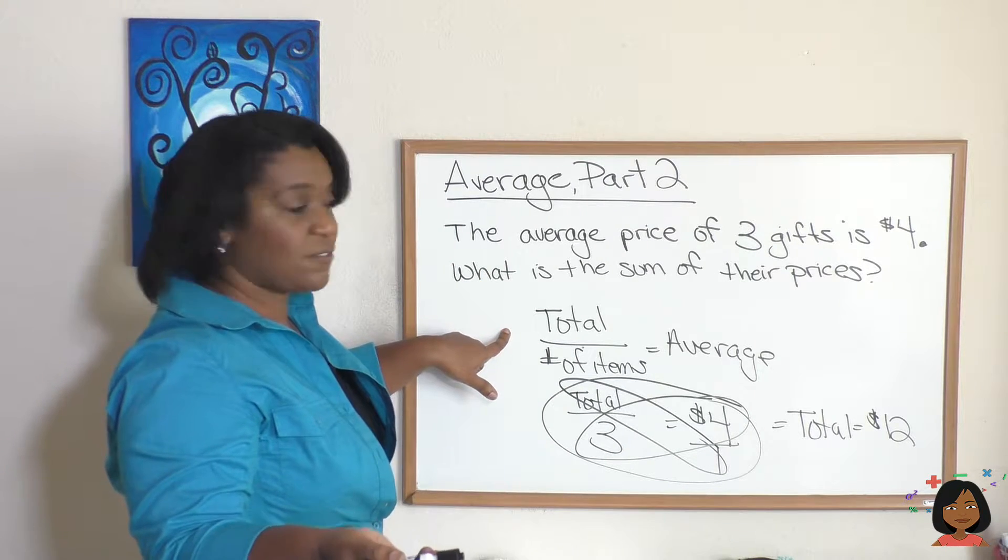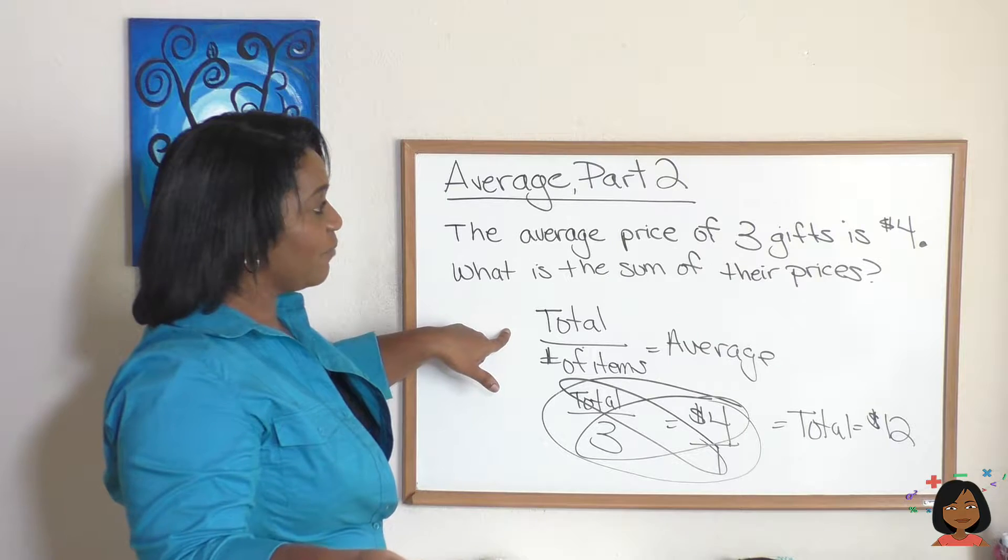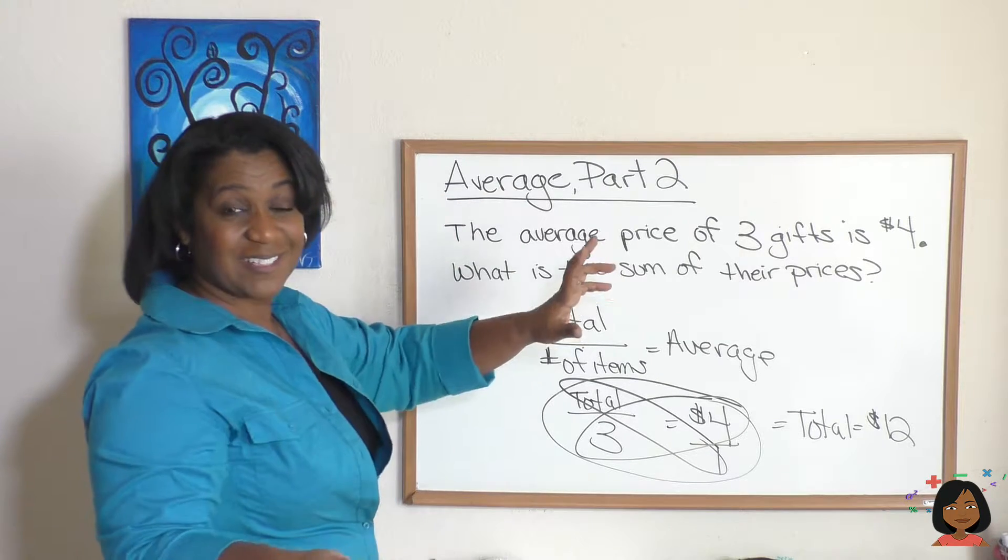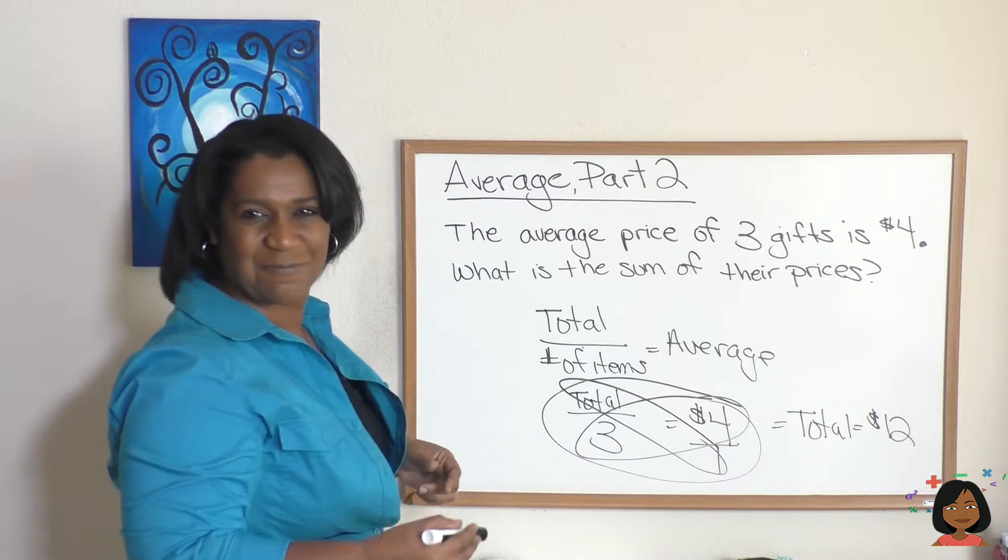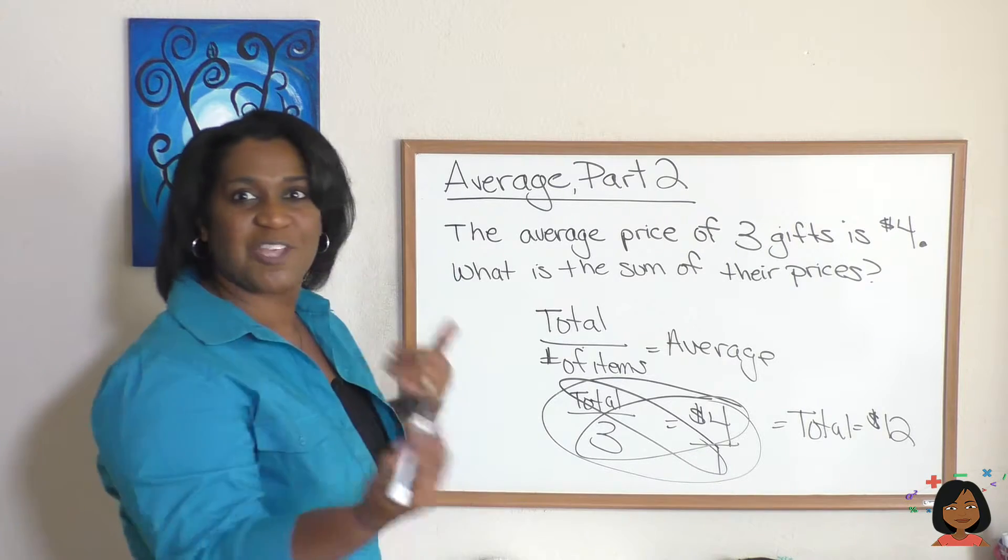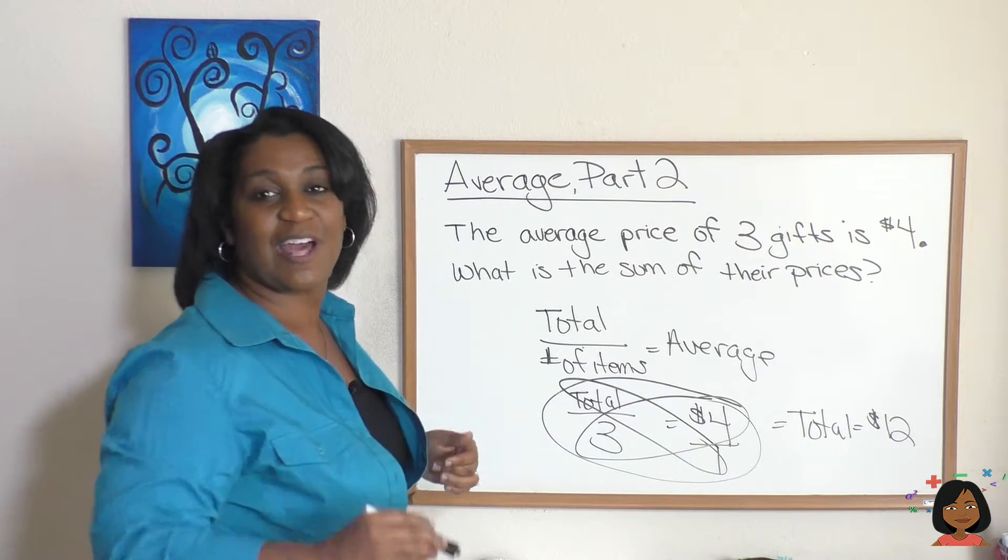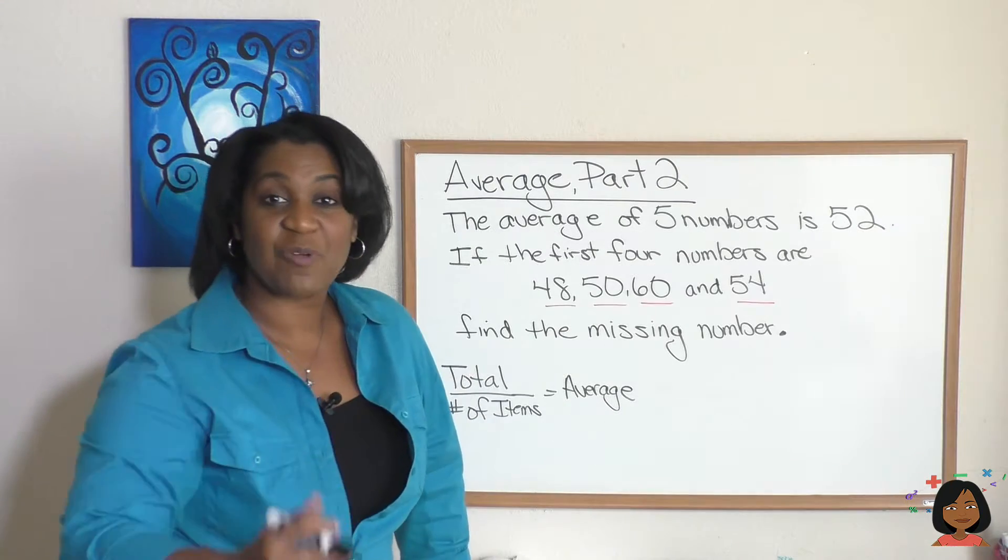Think about it in reverse. If I told you that each gift cost four dollars, you had three of them, four times three is twelve. You divide by three, you would have gotten four. So we're just going in reverse.